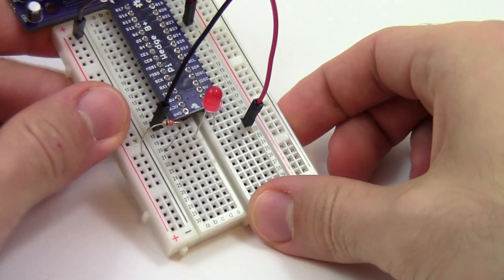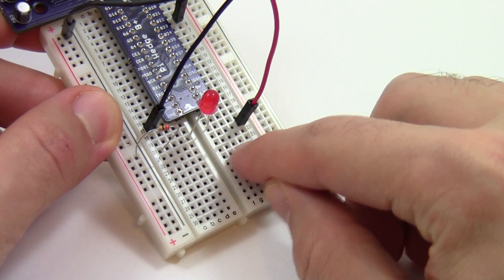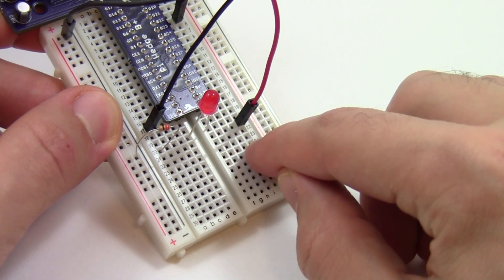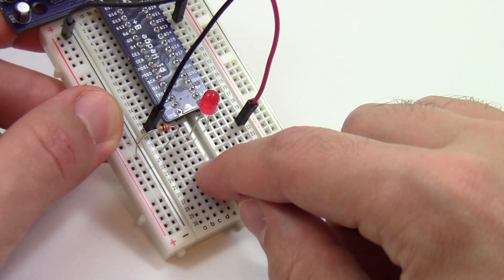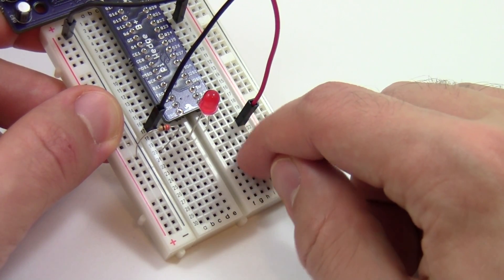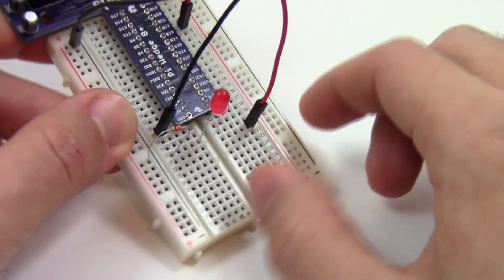If you read the tip about breadboards, you'll know that this is because holes are electrically connected in each partial row of the breadboard. So this half row, those five holes are connected, and in this half row, these five holes are connected. But holes in adjacent rows are not connected, so row 20 is not connected to row 21.